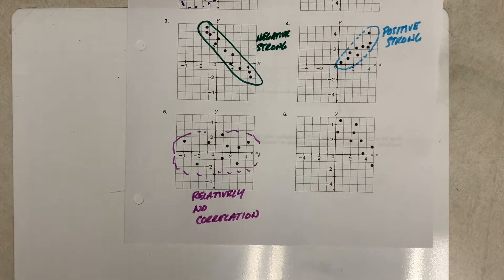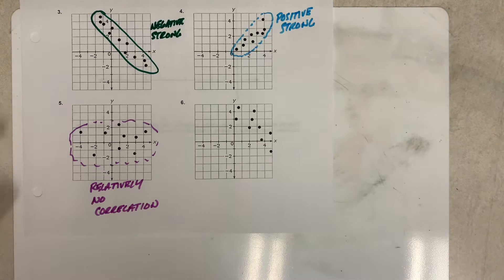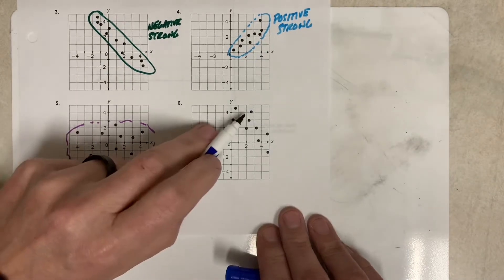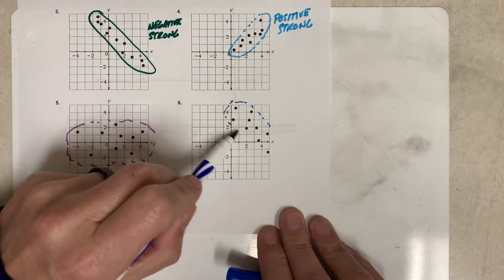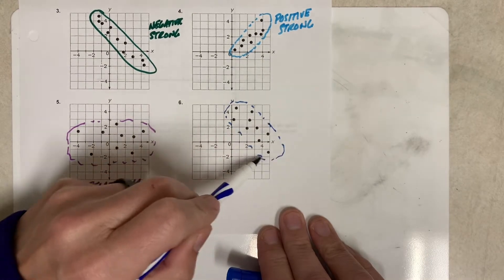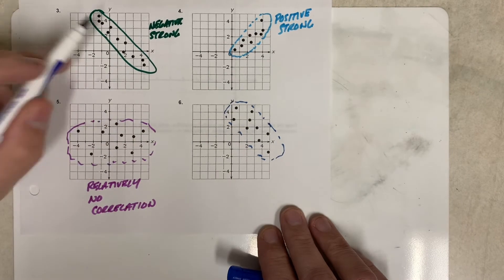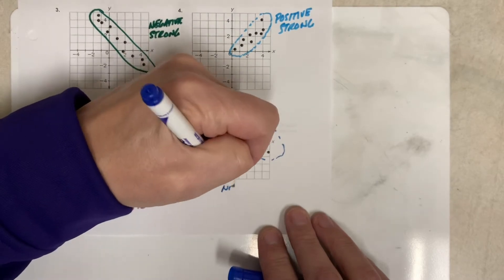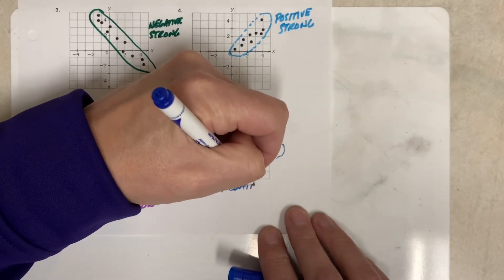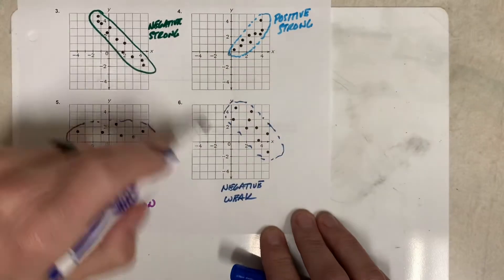All right, and finally number six. If we look at these, we see the dots kind of clustered going down like this. It's definitely not as strong as this one, so for this one, for number six, we'd probably say negative, but we'd say probably weak because it's definitely weaker than this one.